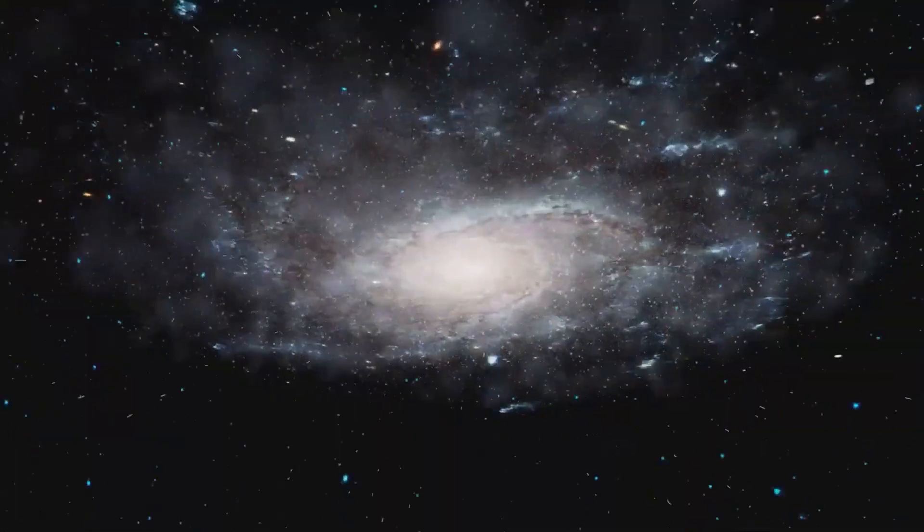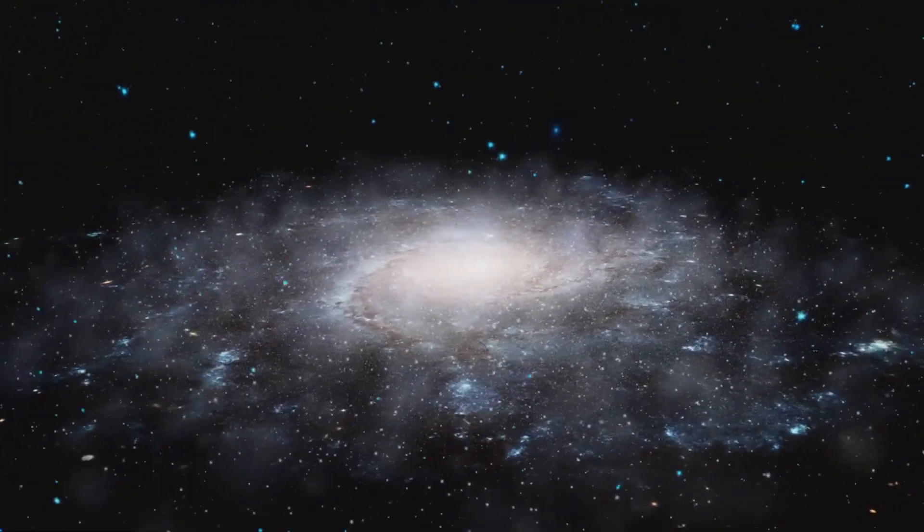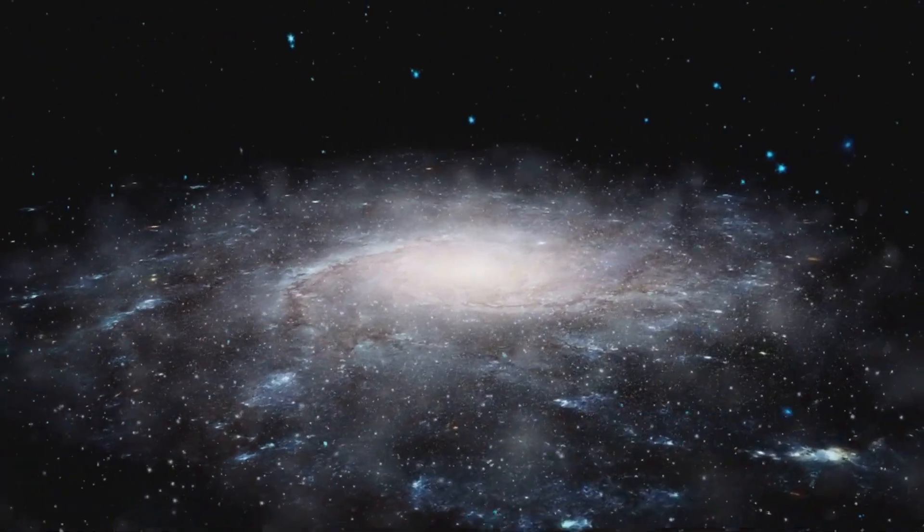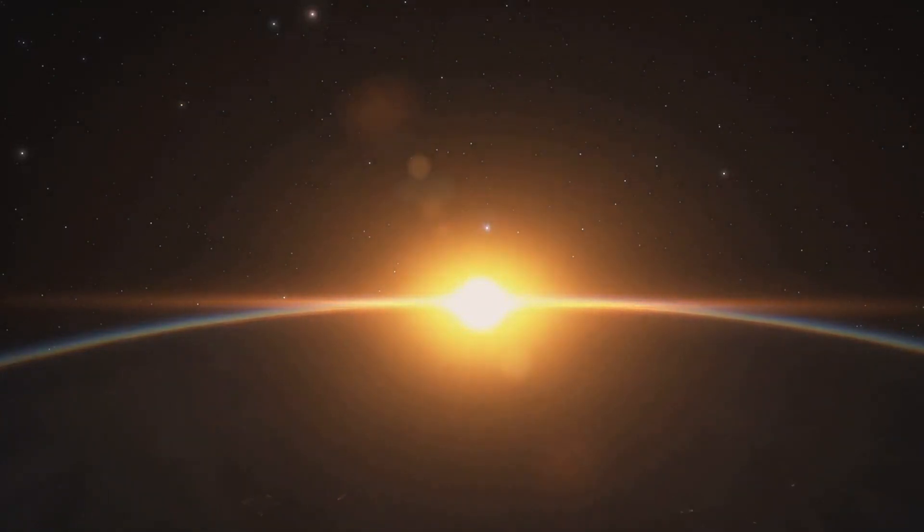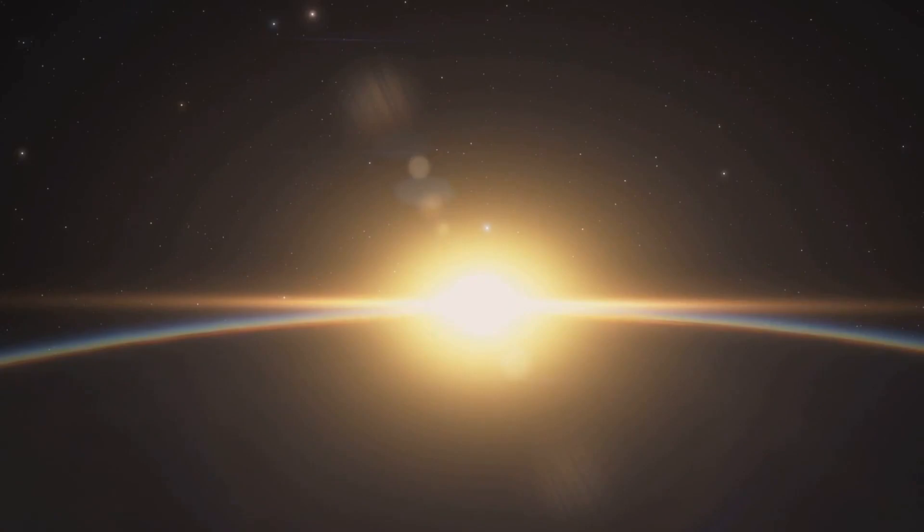You see, our sun, that brilliant fiery star at the heart of our solar system, is not fixed in place. It's actually on a journey, moving through the galaxy. And the planets, Earth included, are along for the ride, orbiting the sun even as they themselves are swept along in its galactic voyage.